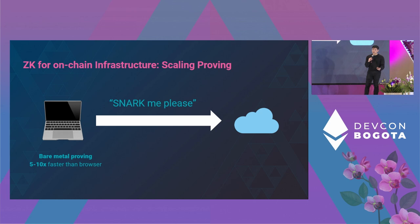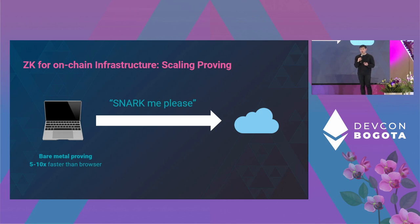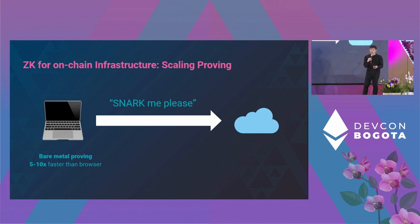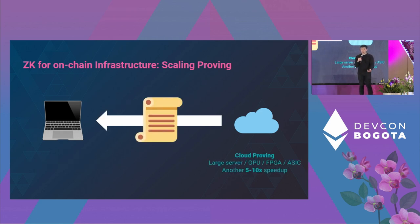Because we're only asking for a succinct proof, we can really scale the prover. First, we can prove on the user's bare-metal CPU, giving a 5 to 10x improvement over in-browser proving. Second, we can outsource the prover to the cloud — the user sends a request for a SNARK proof, and the cloud-based server can run a large AWS instance, a GPU, an FPGA, or eventually an ASIC. That can give another 5 to 10x speedup in proving time.